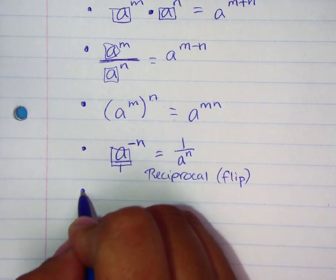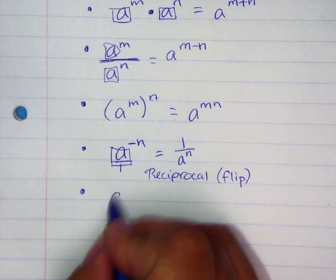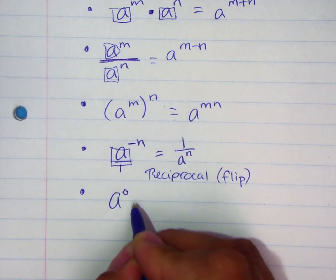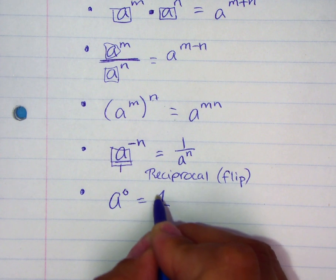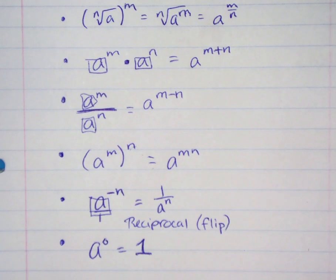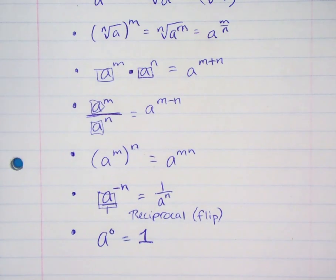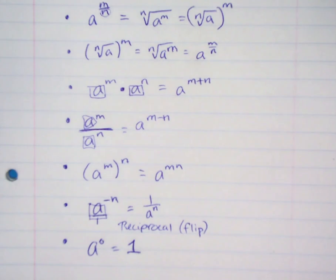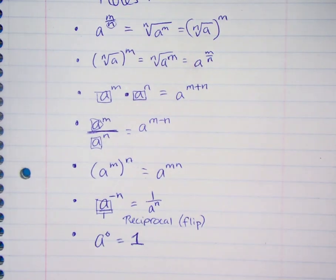One last Algebra 1 rule is the zero rule: when your exponent is 0, the answer will always be 1. All these rules are from Algebra 1. When simplifying expressions, there's no set order for which rule to use first, so you just need to practice, practice, practice. That's what the next video, Part 2, will have.